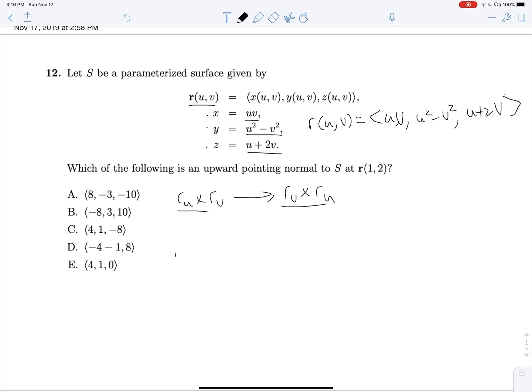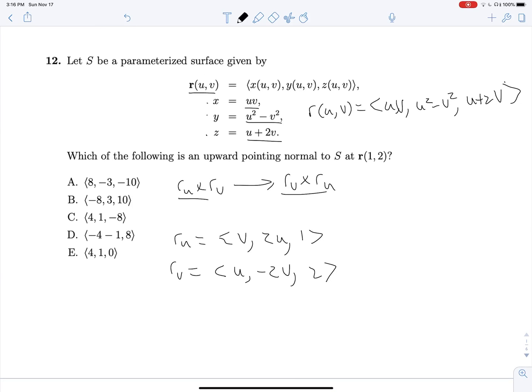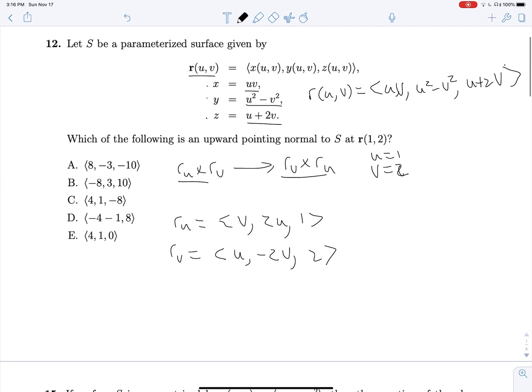And so now we can find RU, that's going to be V comma 2U comma 1, and RV, which is going to be U comma negative 2V comma 2. So now, since we know that we're at the point U equals 1 and V equals 2, we can make our lives a little bit easier by substituting those in. So this is going to be, U equals 1 and V equals 2. This will be equal to 2 comma 2 comma 1, and this will be equal to 1 comma negative 4 comma 2.